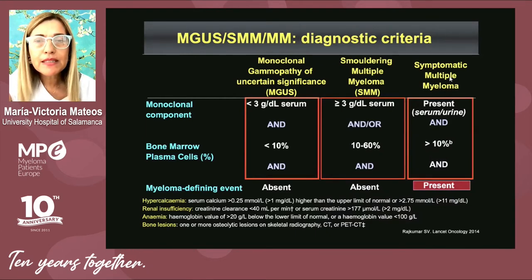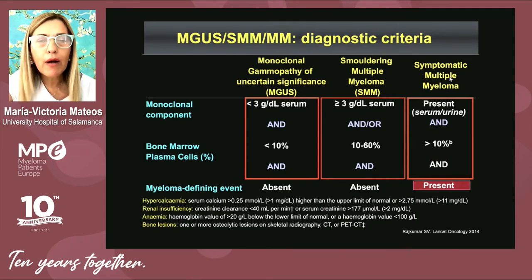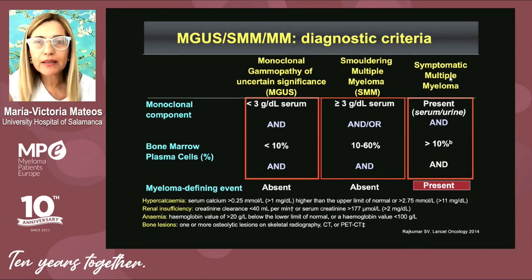Monoclonal hemopathy is defined by the presence of a monoclonal component inferior to three grams per deciliter, and the plasma cell bone marrow infiltration is quite low — less than 10%. An important point is that there is not any myeloma defining event, and patients are completely asymptomatic.